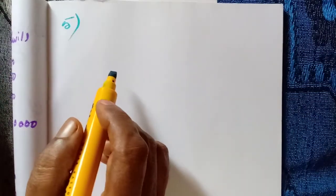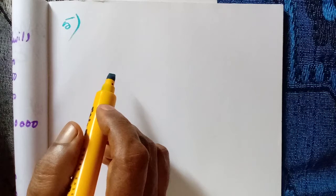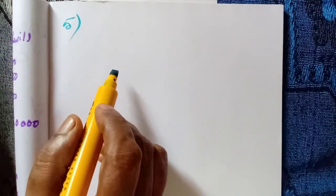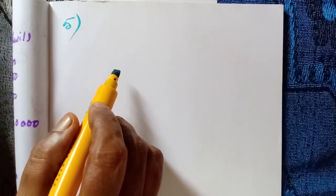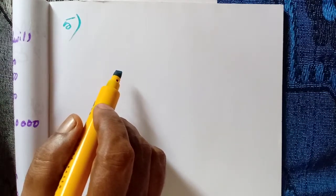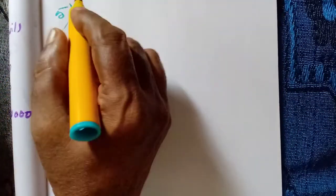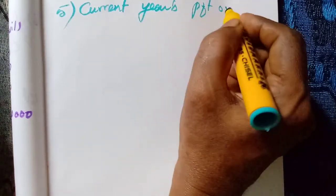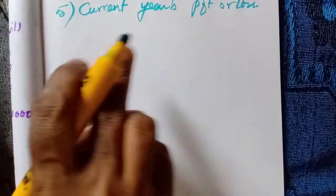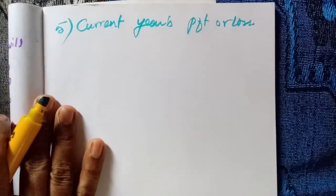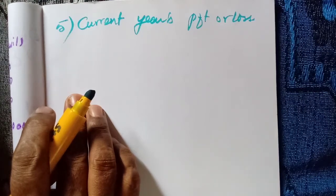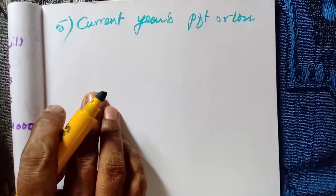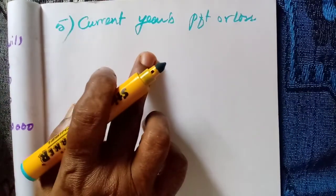Good morning students, hope you all are doing good. Shall we come back to our lesson? In partnership accounts, we are dealing with the retirement of partners. We have completed four adjustments. The fifth one is the adjustment of current year's profit or loss. The current year's profit or loss up to the date of retirement will be transferred to the retiring partner's capital account.